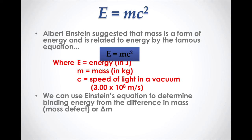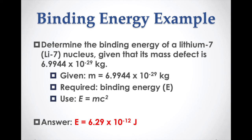Getting back to binding energy and mass deficit: when we take those nucleons and press them together into a nucleus, we're converting some of the mass of those nucleons into the energy required to keep them bound together — that's where E = mc² comes in. For example, for lithium-7 the mass deficit is a certain number of kilograms. You pop that into E = mc² — don't forget the squared — and even though the mass is tiny (around 10⁻²⁹ kg), multiplying by c² gives an energy of around 10⁻¹² joules.